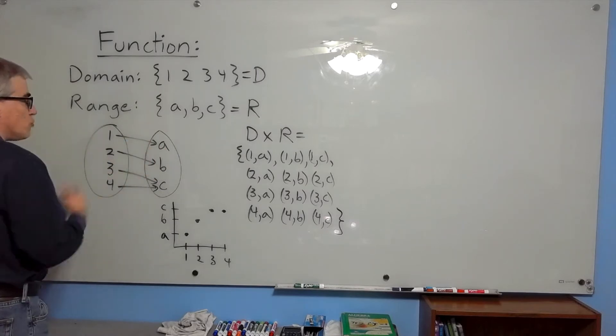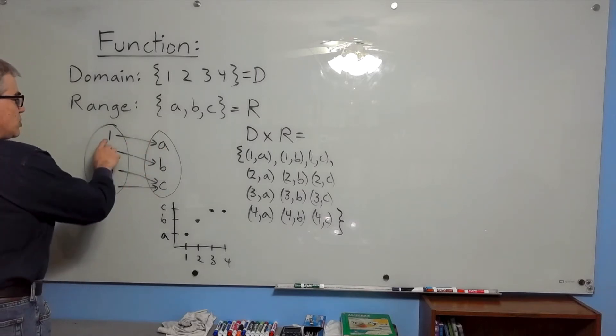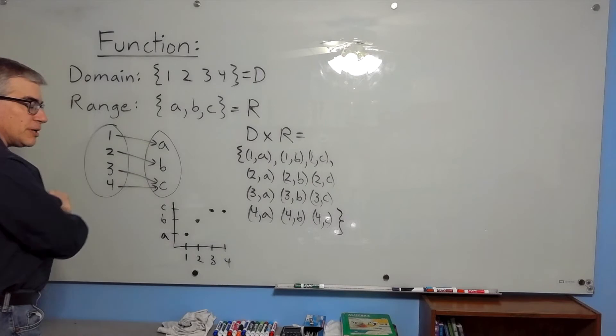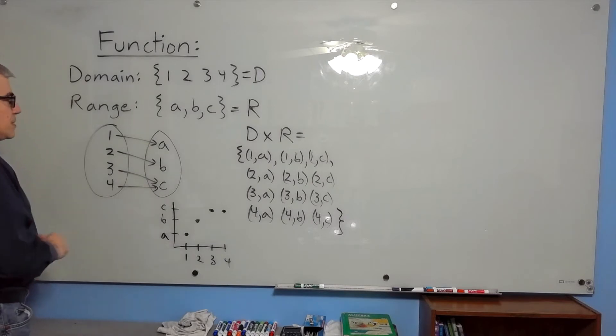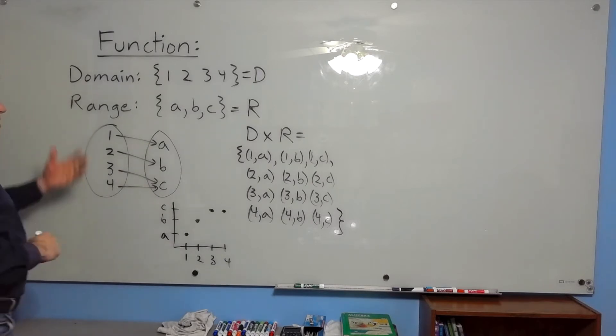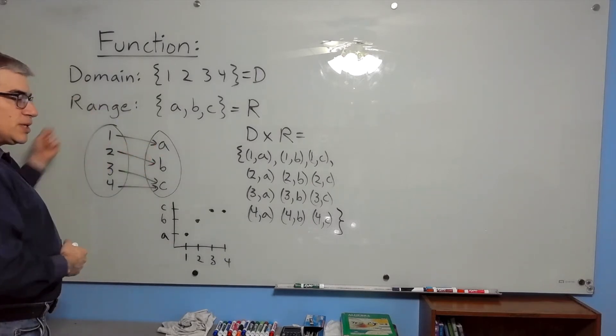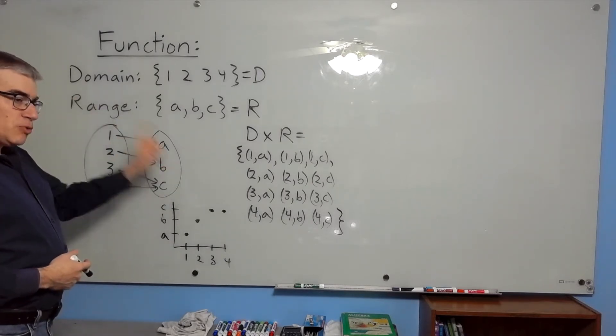The rule is that you can only have one output per input. We can think of a function as a machine — it takes an input and gives an output, but only one.